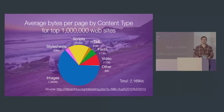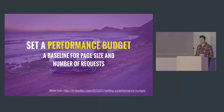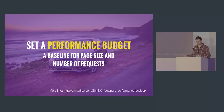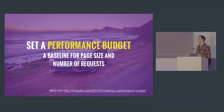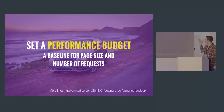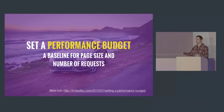No amount of optimization will save us if we've got 27 images on our home page. The problem needs to start at the root — we need to set a performance budget, defined by how long we'd like someone to wait for our page to load. Our client might have a non-functional requirement about expected load time, or we can look at competitors' page sizes to guide us. A performance budget sets a baseline for page size and number of requests, and then we consider whether images, fonts, and carousels are really worth it.